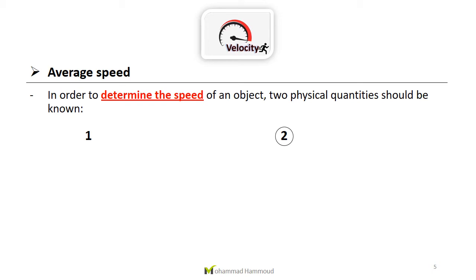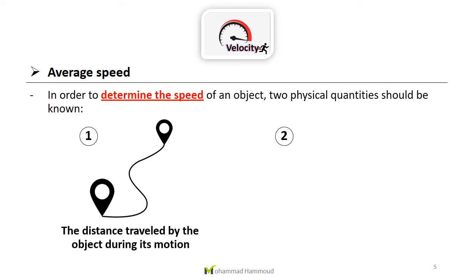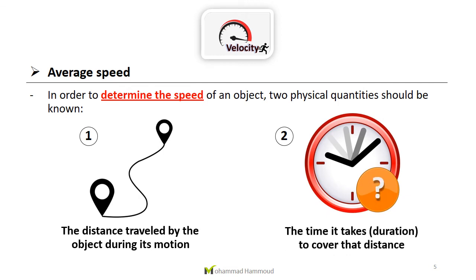To determine the speed of an object, I need two known quantities. The first is the distance traveled by the object during its motion. So whenever I want to calculate or determine the speed of an object, I must have the distance and the duration.